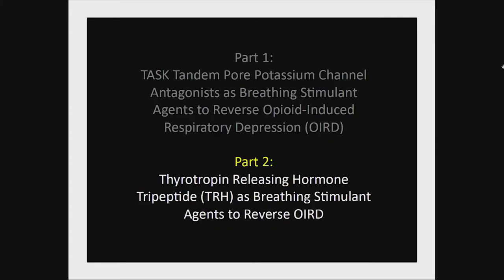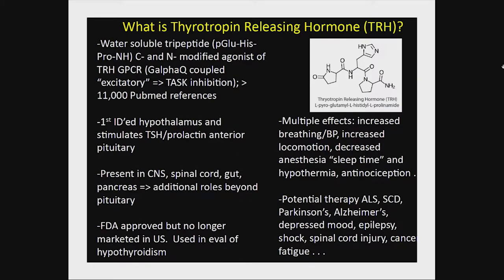I'll next talk about TRH as a breathing stimulant. TRH is a water-soluble endogenous peptide or hormone. Its structure is a tripeptide — its N-terminus and C-terminus are modified: the carboxylate is amidated, and the glutamate residue swings around to form an amide bond creating a pyroglutamyl residue. Its endogenous receptor is a TRH G-protein-coupled receptor, GQ-coupled — an excitatory receptor. We became interested in it because it inhibits TASK channels in the brain.